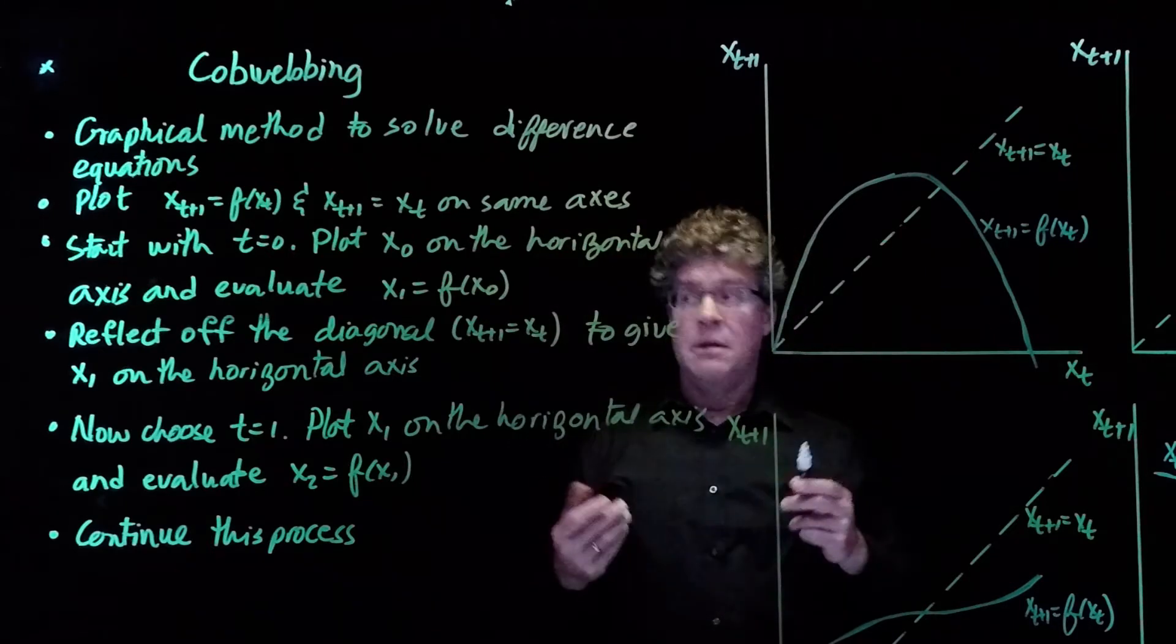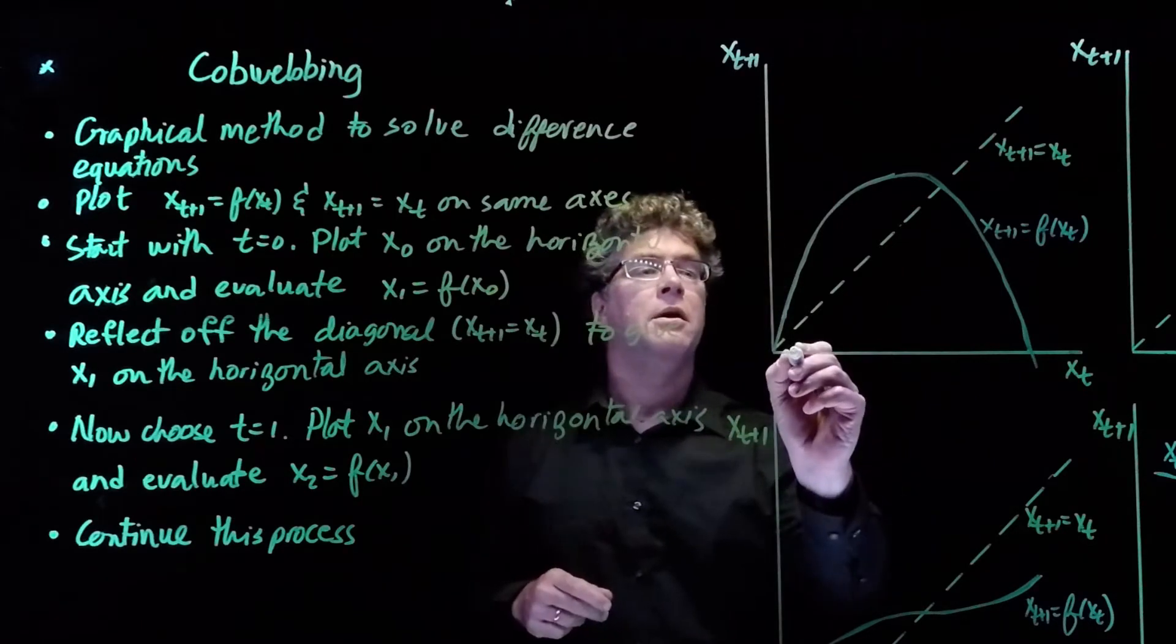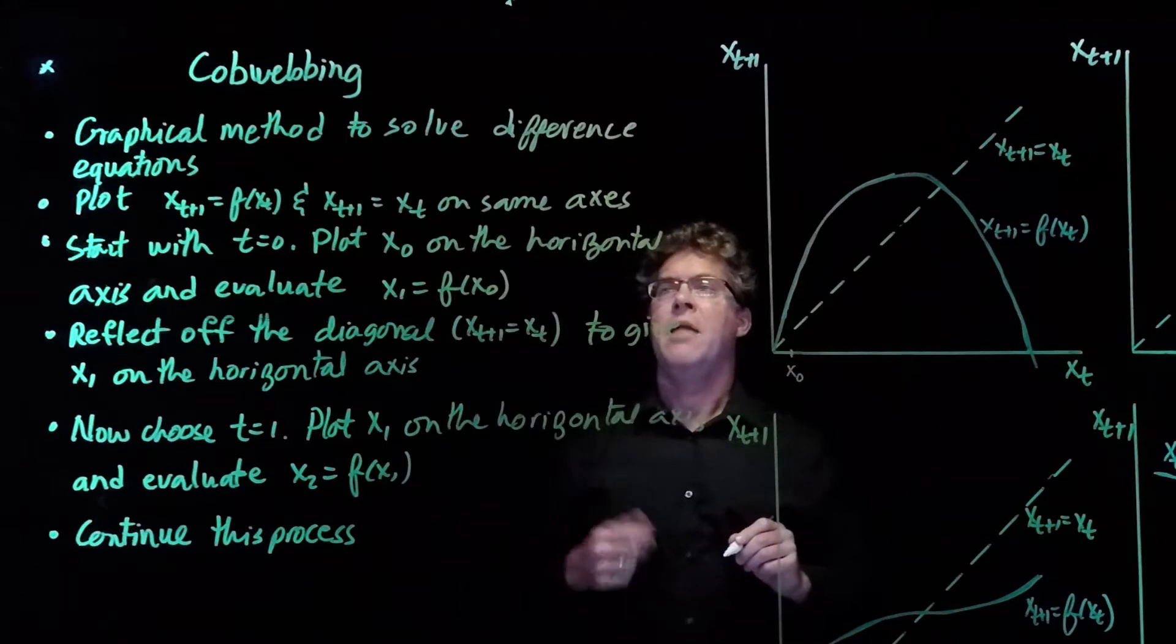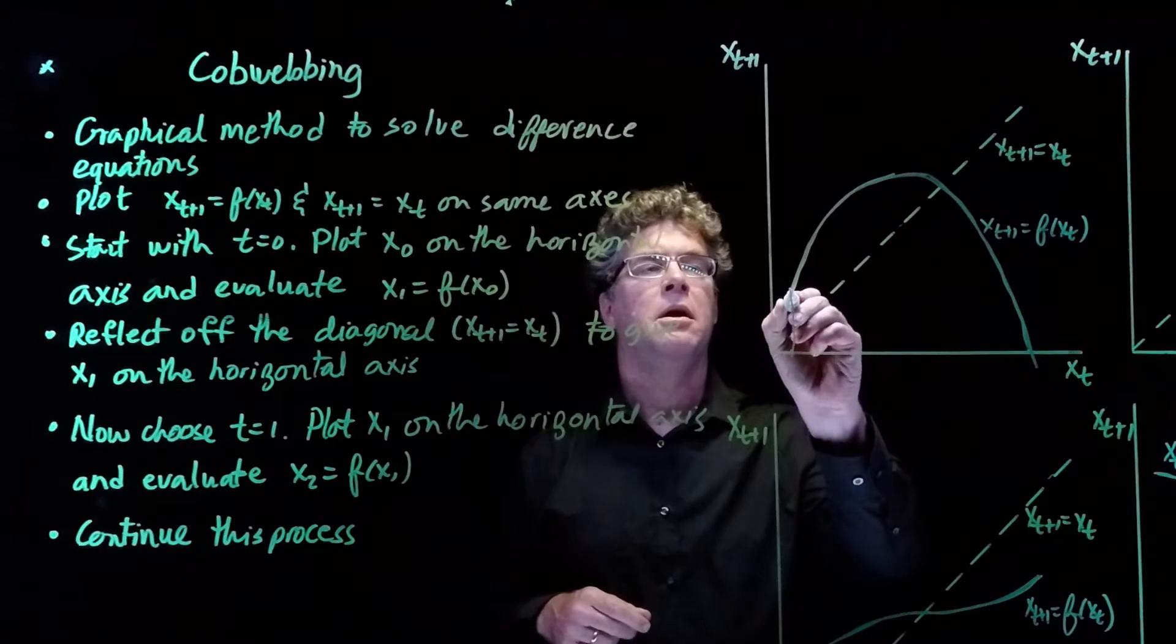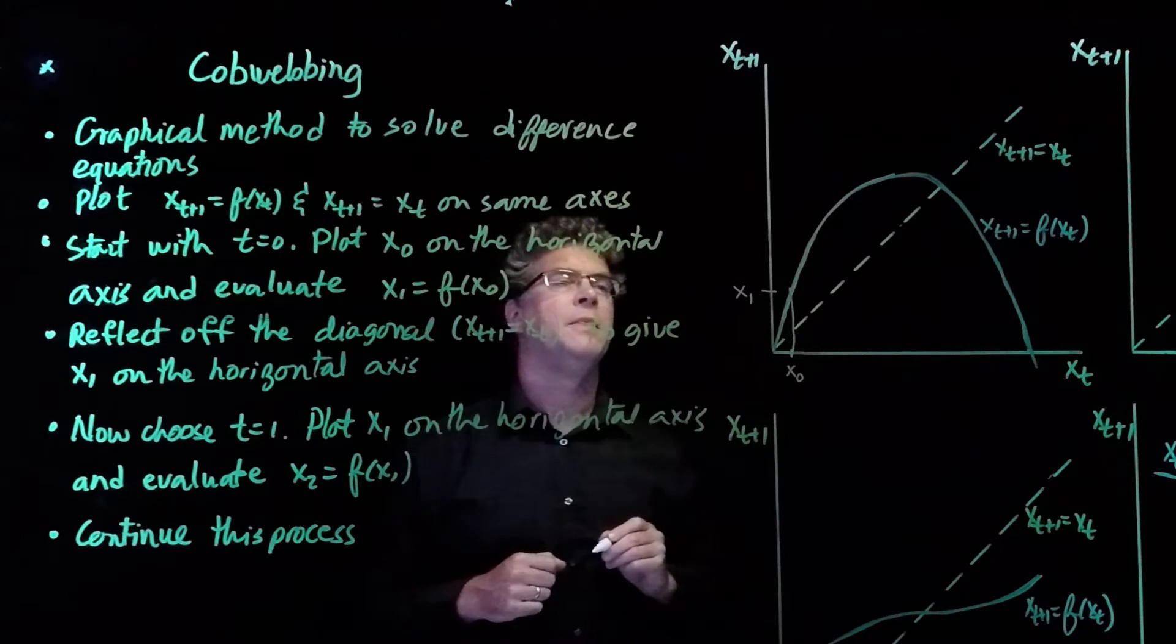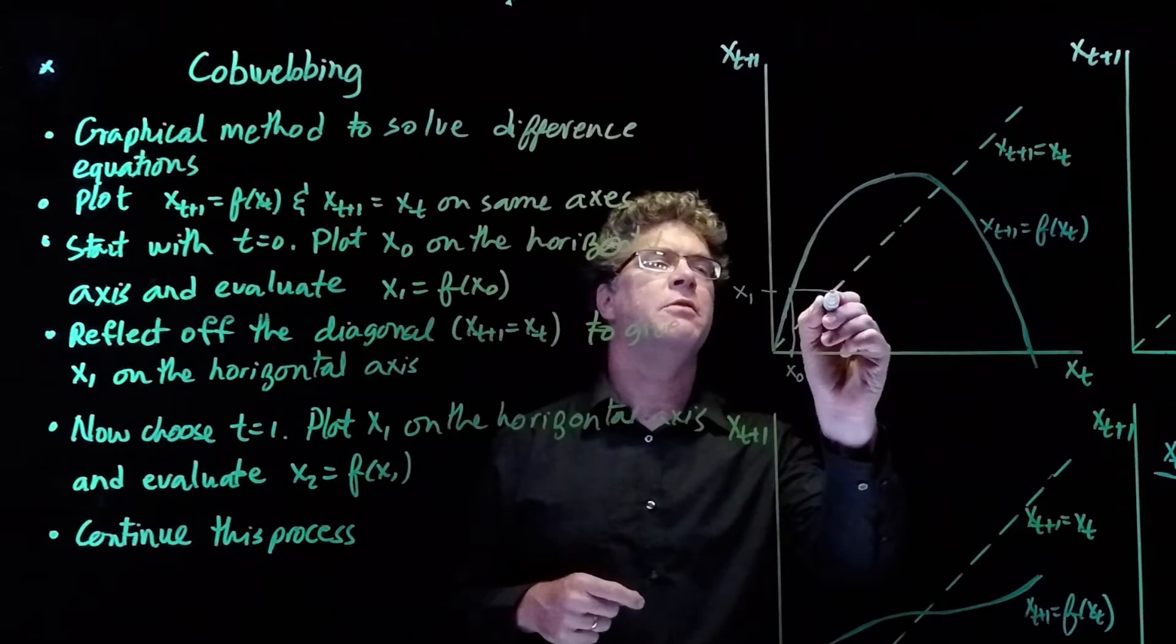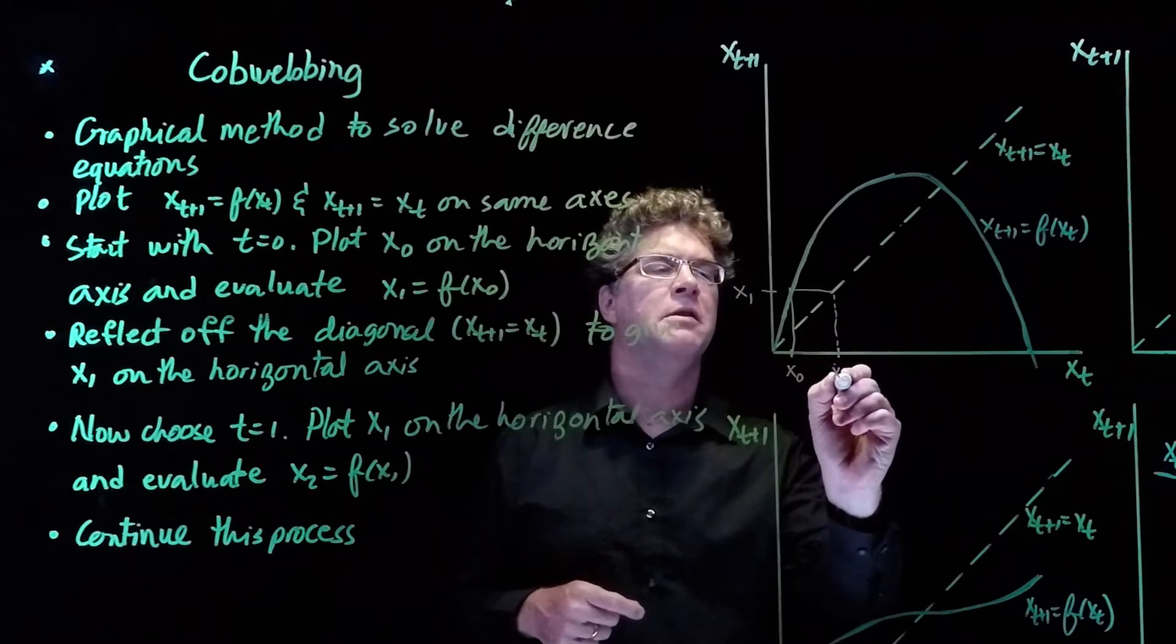And then what we do is start at t = 0, and we take some point which we call x_0 on the horizontal axis, and then we move up to the function and calculate x_1. So this gives us a single step for the difference equation, but we want another step, so we're going to reflect off the 45 degree line, and if we come down, this will give us x_1.